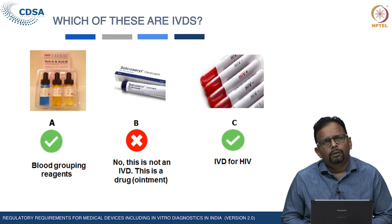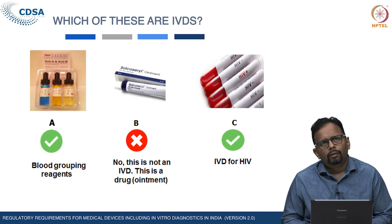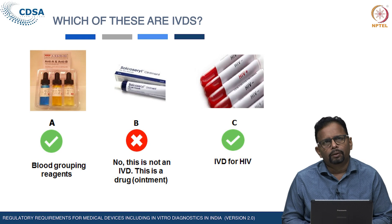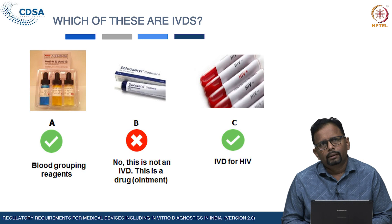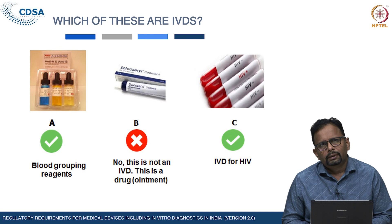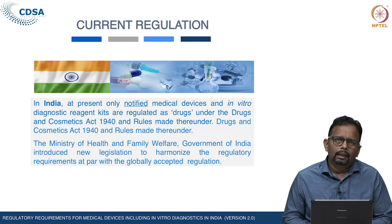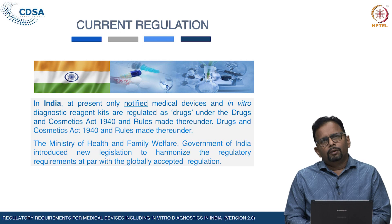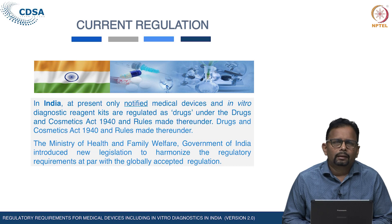Checking specific examples: blood grouping reagents are an IVD kit and are regulated. An ornament is a drug — it is not an IVD kit or medical device. HIV IVD kits, as already discussed, are notified in vitro diagnostics and are regulated. These different categories of IVD kits are regulated under specific clauses of the drug definition.